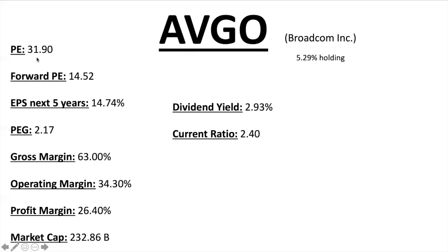Broadcom Incorporated, ticker AVGO, has a 5.29% holding in the ETF. PE ratio a little high at 31.9, Forward PE 14.52 — people are buying in now as the stock has dipped knowing it will have better earnings in the next several years. EPS next five years 14.74%, PEG ratio 2.17 — a little high but okay. Margins are fantastic: gross margin 63%, operating margin 34%, profit margin 26.4%. Market cap about a quarter trillion, nearly 3% dividend, current ratio 2.40.